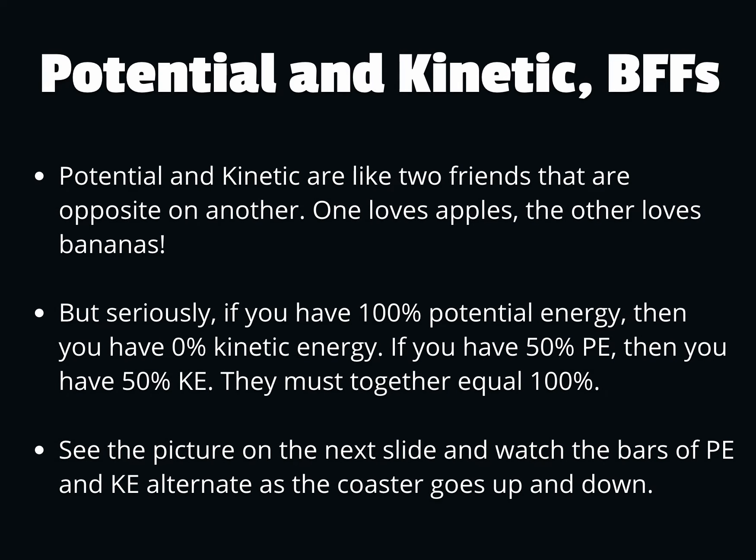With potential and kinetic energy, we can look at them like best friends who are also sort of opposites of each other. If we have 100% energy total, it's always going to be 100%. So if we have 100% potential energy, then we have 0% kinetic energy. On the other hand, if we have 100% kinetic energy, we have 0% potential. We can also have in-betweens — like 50% potential and 50% kinetic — everything in between that equals up to 100%.